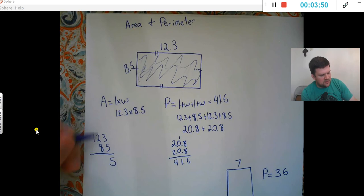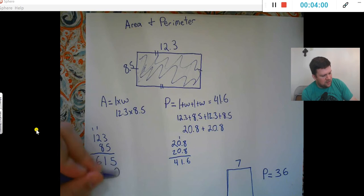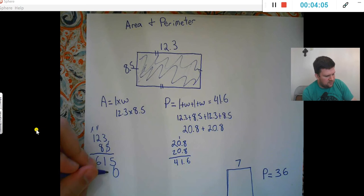5 times 3 is 15. Carry. 5 times 2 is 10, 11. 5, 6. Now 0 the hero. Mark all that out.